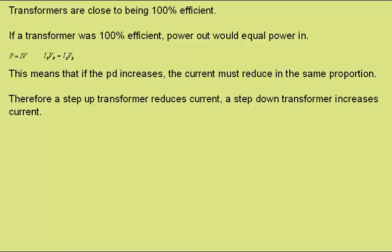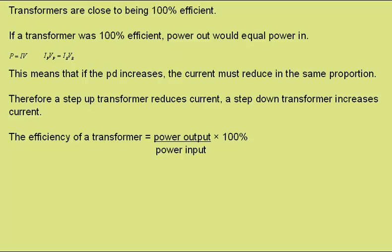Therefore a step-up transformer reduces the current and a step-down transformer increases the current. The efficiency of a transformer is given by the power output divided by the power input multiplied by 100 to give a percentage. Or we can write it as the current in the secondary times the potential difference across the secondary, divided by the current in the primary times the potential difference across the primary, times 100.